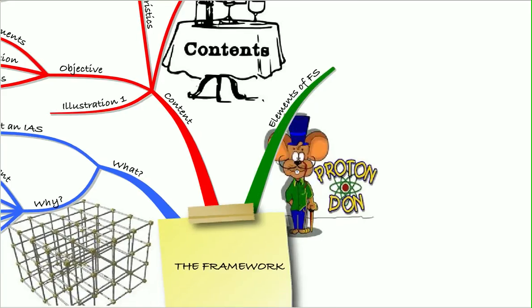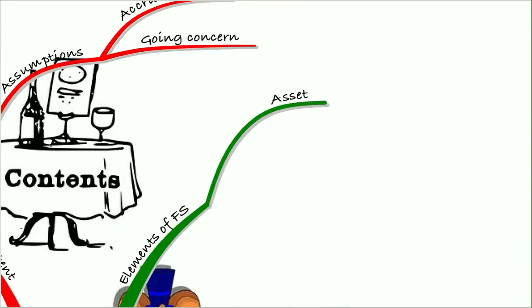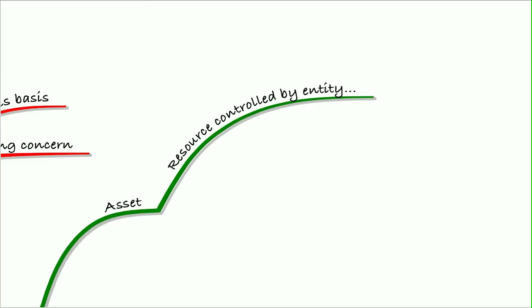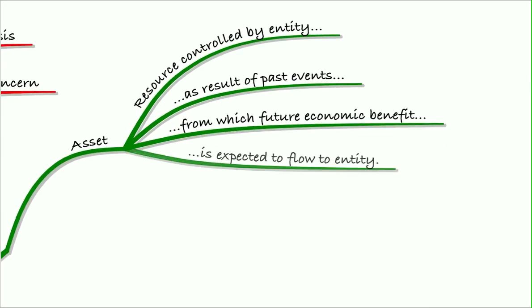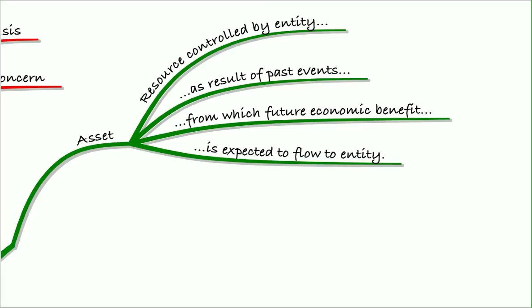The framework also gives us definitions for the different elements of the financial statements. For example, the definition of an asset is given as a resource controlled by the entity, as a result of past events, from which future economic benefit is expected to flow to the entity. That's the definition of an asset. And you'll see as you look at different standards, that is what they refer to whenever they say whether or not to recognise an asset.